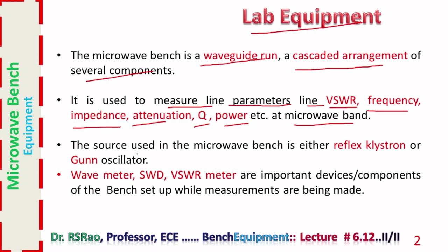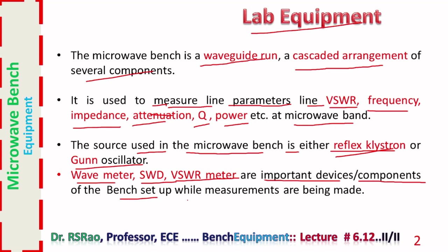The source used in the microwave bench is either a reflex klystron or a Gunn oscillator — the first is a microwave tube and the second is a solid state device. Wave meter, VSWR meter, and SWD (standing wave detector) are important components of the bench setup while measurements are being made.